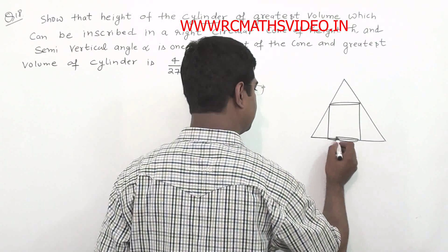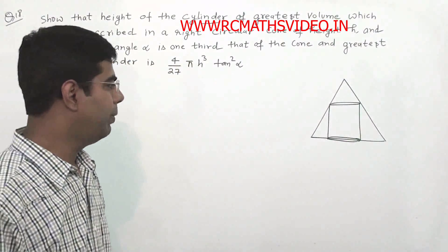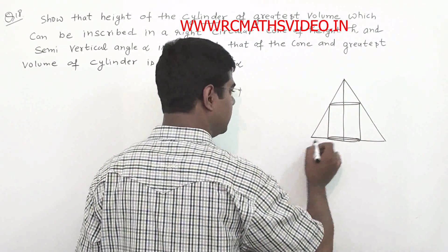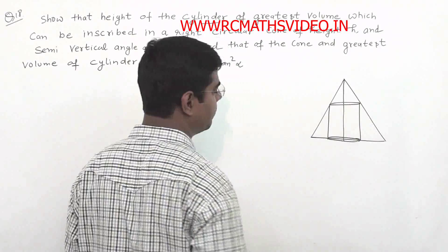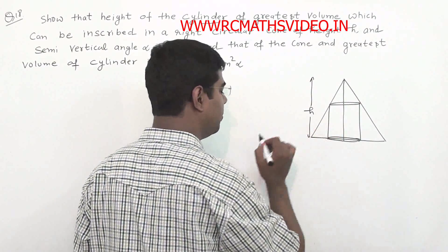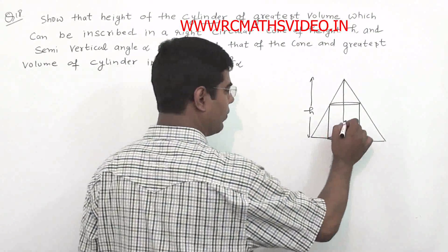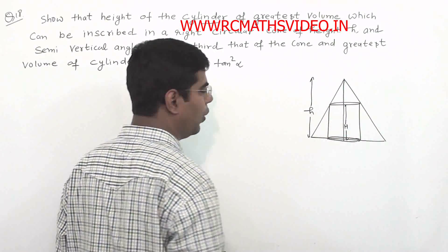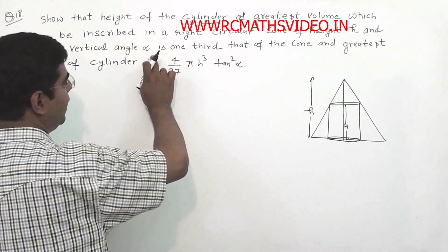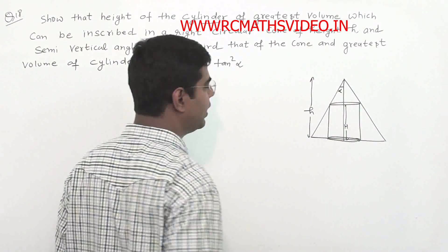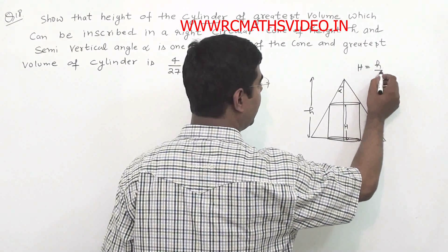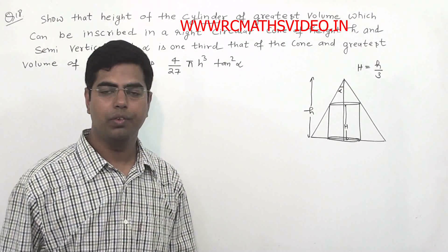Volume of the cylinder is to be maximized. The cone has height small h and semi-vertical angle alpha. We need to take capital H for the height of the cylinder. We have to show that the height of the cylinder H equals h by 3, i.e., one third the height of the cone.